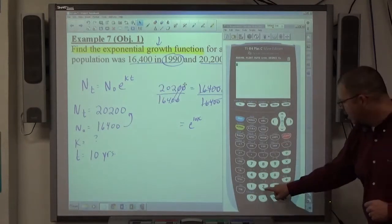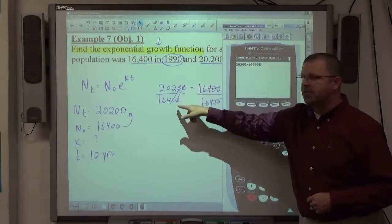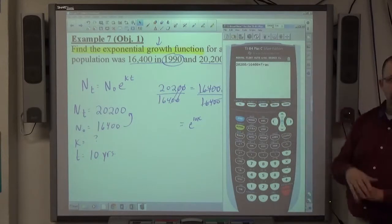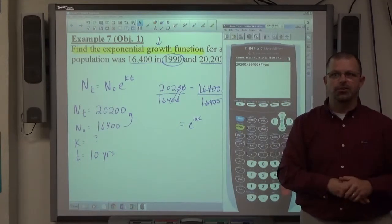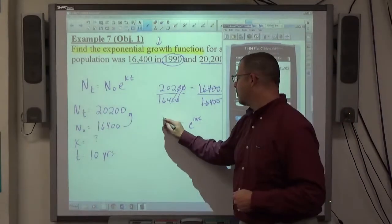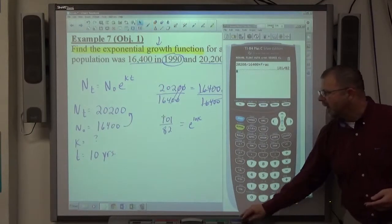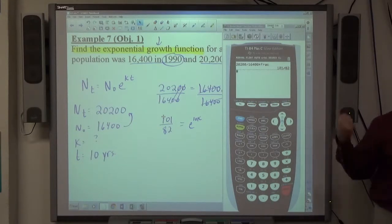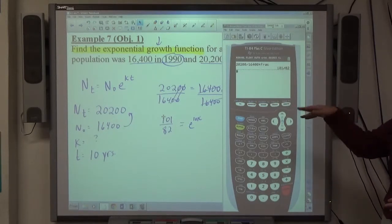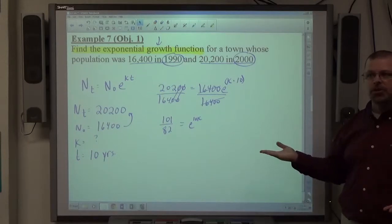If you want to get a reduced fraction on your calculator, it's real simple. You type in the fraction, 20,200 divided by 16,400. Just write the fraction as a division problem. Top divided by bottom. And then, in your math menu, the very first one is frac. So, we hit math, enter. Puts this little arrow frac next to it. All that's telling the calculator is, work this out. Give me the answer as a fraction. And it does. And it reduces the fraction to the lowest terms. 101 over 82 is exactly what that equals. The decimal version of that would be close to what that equals. I'd rather get the exact.